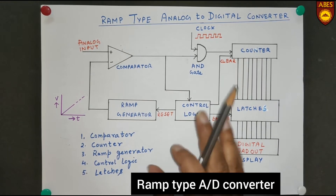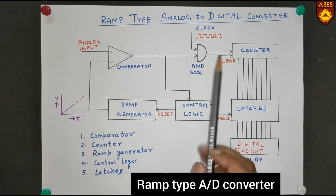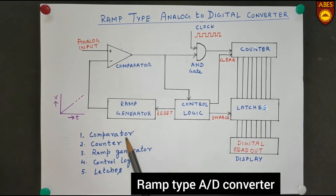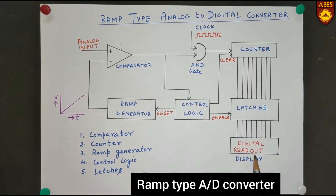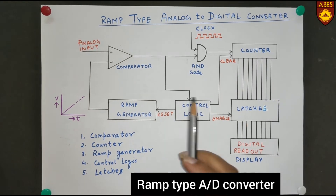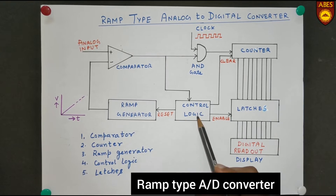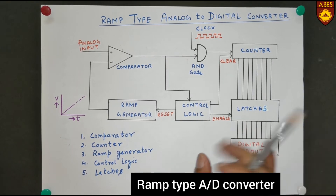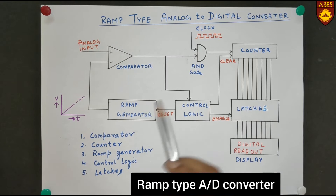The main building blocks of this type of ADC are shown in the figure. Number 1 is Comparator — the most important part — then Counter, Ramp Generator, Control Logic, Latches, and Digital Readout, which is basically a Digital Display Unit. The brain of this ADC is the Control Logic, which controls the Counter, Latches, and Ramp Generator.